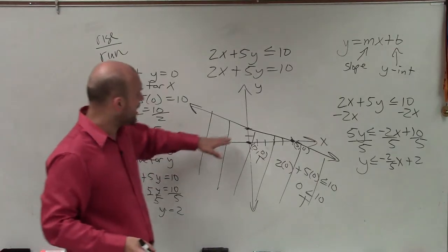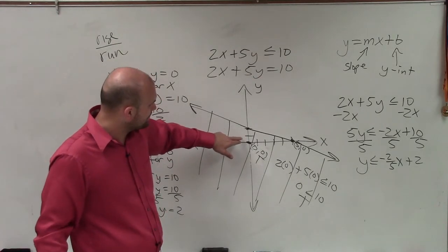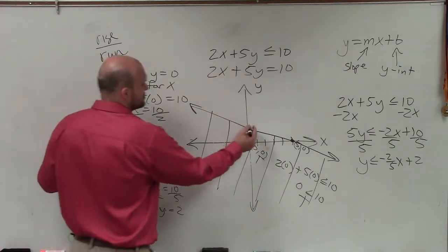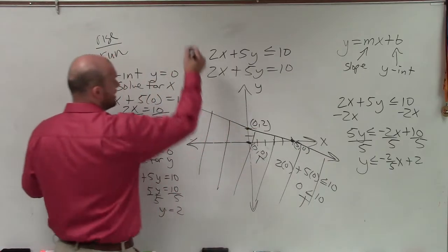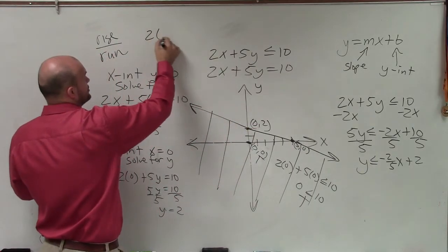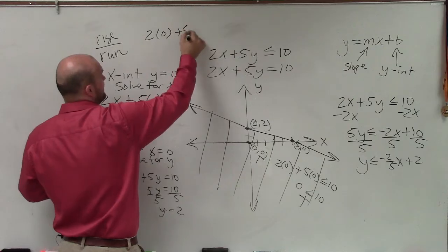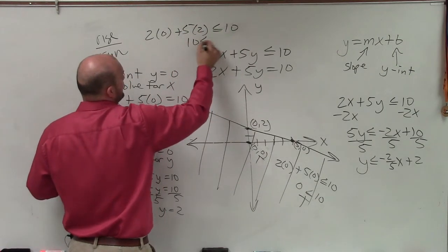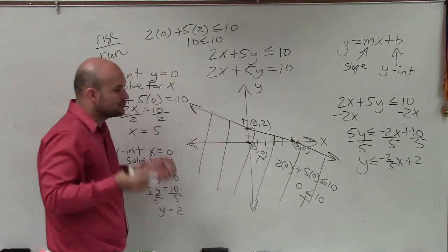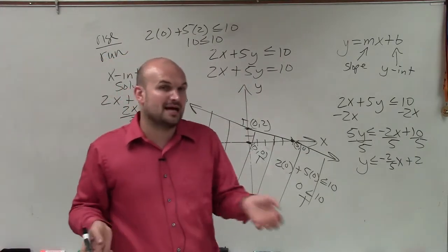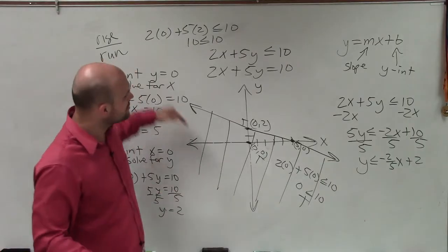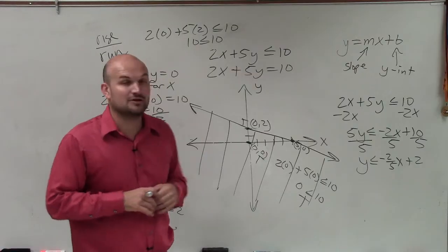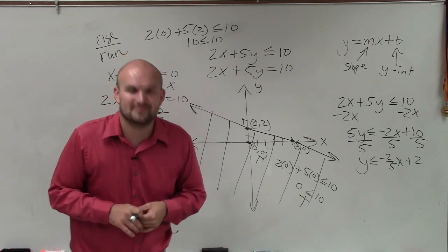Let's also verify why the line is solid and not dashed. If I choose the point (0, 2) and plug it in: 2 times 0 plus 5 times 2 is less than or equal to 10, which is 10 less than or equal to 10 — that's true. Since it's true, all points on the line are part of the solution, which is why it's a solid line and not dashed. So there you go, ladies and gentlemen — that is how you graph a linear inequality in standard form. Thanks.